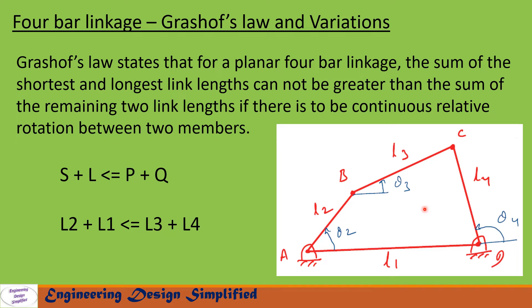So in order for any two members in this mechanism to have continuous relative motion between them, then L2, that is the shortest link length, plus L1, that is the longest link length, should be less than or equal to the sum of the lengths of other two links, that is L3 plus L4.